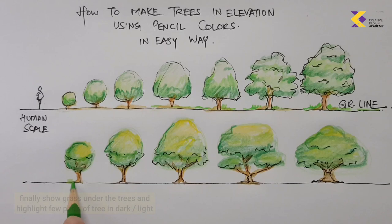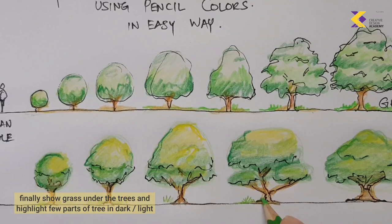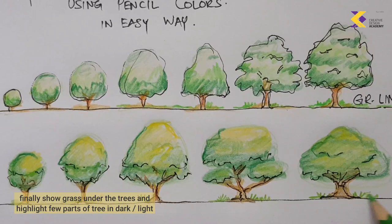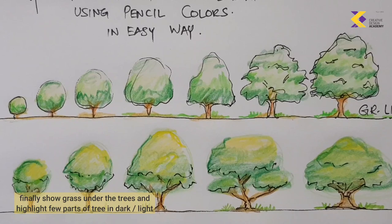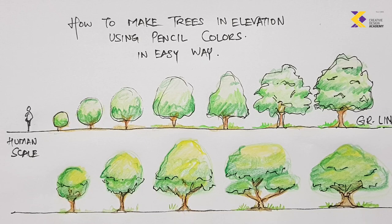The most important part when making a tree is to understand what's below it: because of moisture, a lot of grass grows under the tree. Don't just draw a stick figure — always make a few grass pieces or grass blades growing under the tree, which also gives a good hierarchy of scale. This is how the proportionate diagram of trees is made from small to big.